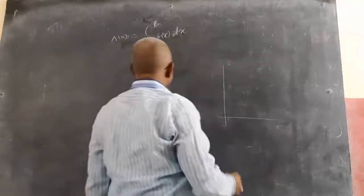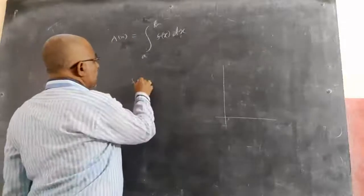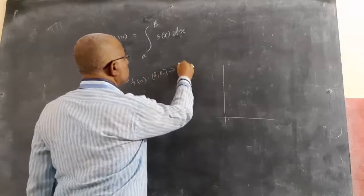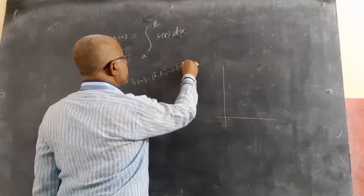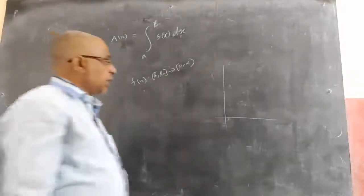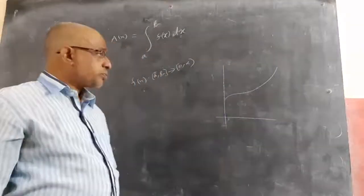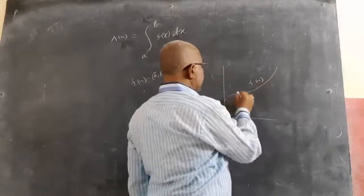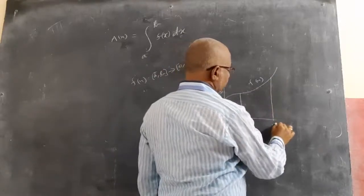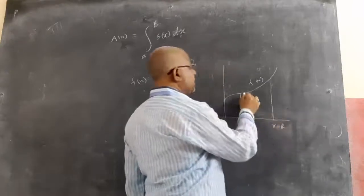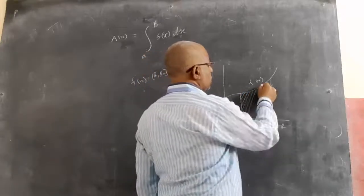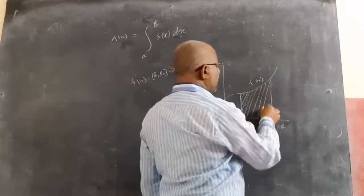Area under the curve made with x-axis between the limits a and b — we already discussed this at the beginning of the chapter. Now if f(x) is a continuous positive function, y is a positive function, between the limits a and b, this is x equal to a somewhere and this is x equal to b somewhere. So integral of a to b f(x) dx gives you the area under the curve.